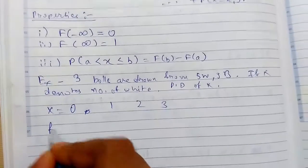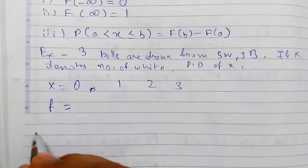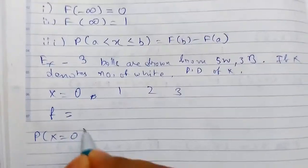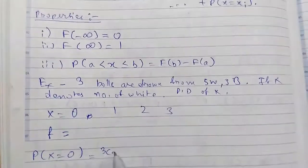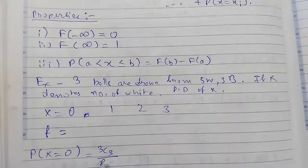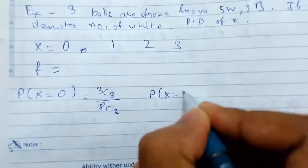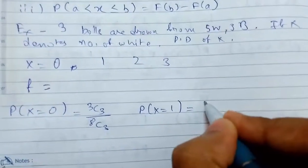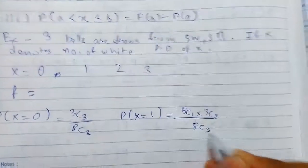So let us see what our F can be. This is the probability mass function. So P of X equals 0, for 0 white, all the balls must be black, 3C3 upon 8C3. Now P of X equals 1, 1 white, 5C1 into 3C2 upon 8C3.